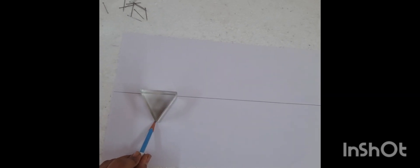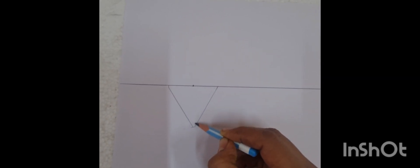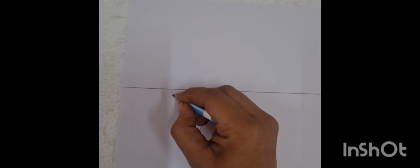After drawing the outline of the prism, mark the point of incidence. One surface will be the first refracting surface, second refracting surface, and this one will be the base of the prism. After marking the point of incidence, draw the normal to the surface and incident ray.